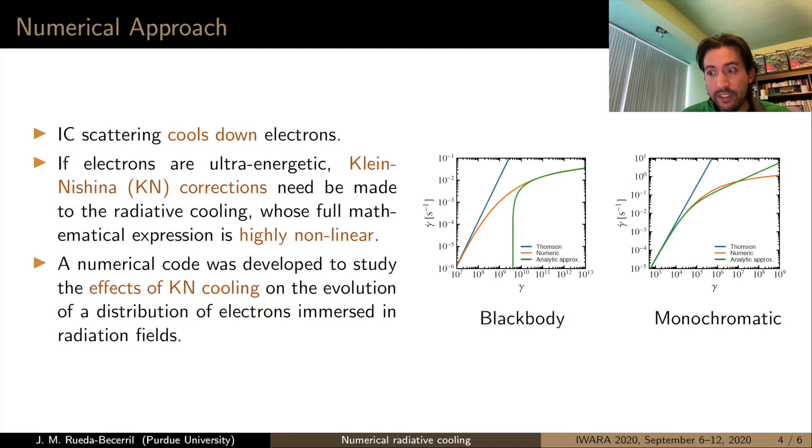However, if these electrons are extremely energetic then we can no longer apply the classical Thomson regime. We need to apply the Klein-Nishina corrections to the radiative cooling. However, these corrections are highly non-linear and therefore numerical tools come handy in order to consider these effects in an evolutionary system.